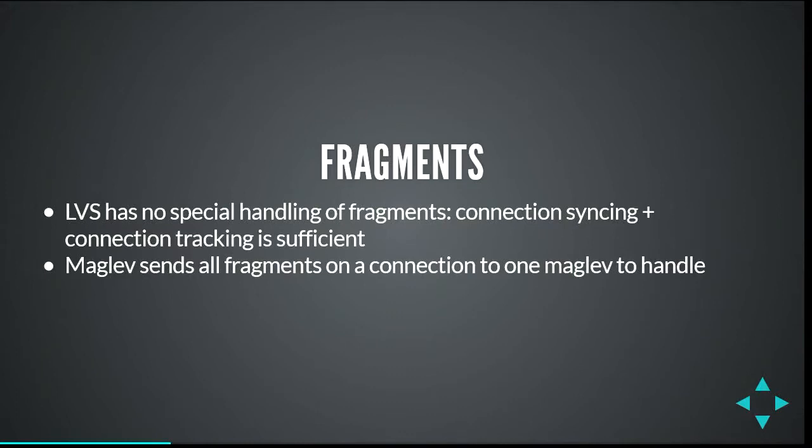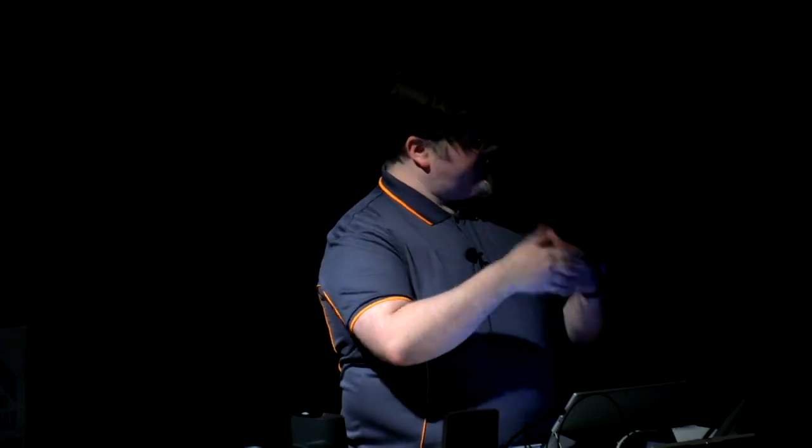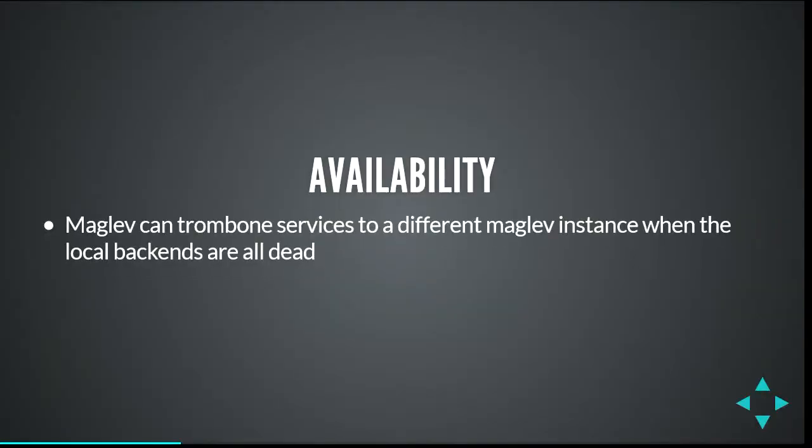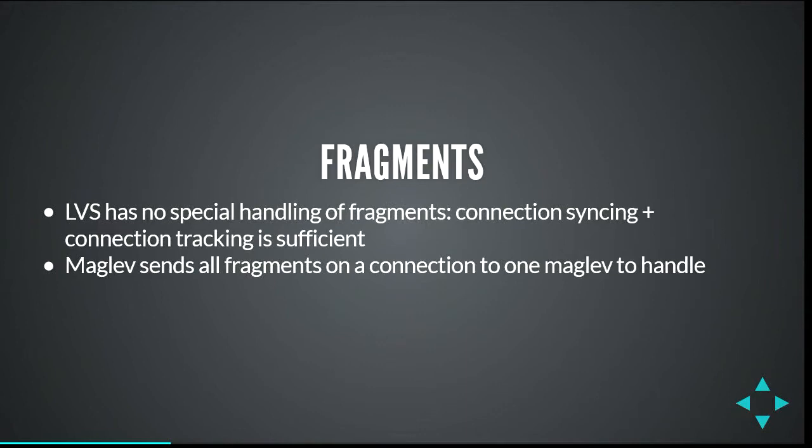Fragment handling: LVS just depends on all traffic landing on every node. Maglev does another hash on the 3-tuple — source IP, destination IP, and protocol — because in a fragment you don't know the ports. When they see a fragment, all parts get redirected inside the Maglev cluster to one machine picked by hash, which is responsible for reassembly — it buffers just long enough until it sees the first bit, then flushes them all independently. This fragment processing is also spread over the whole cluster.